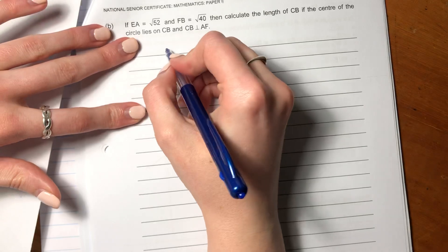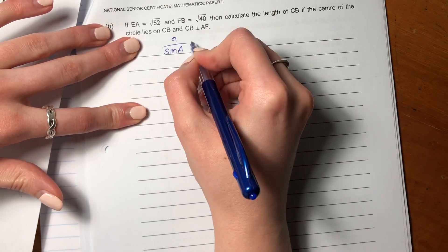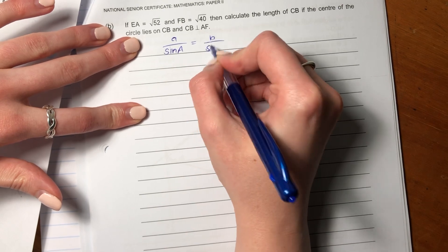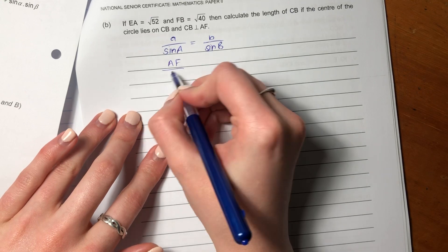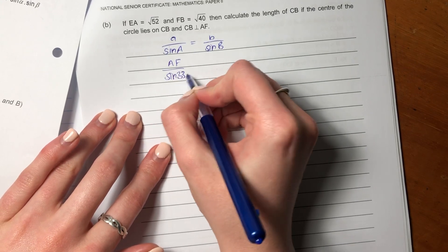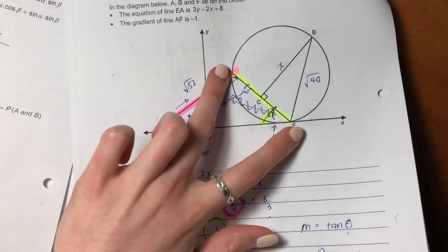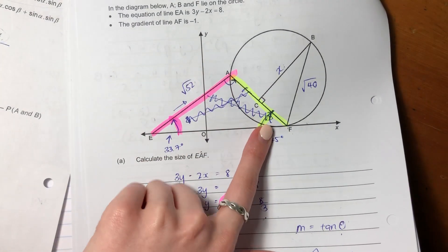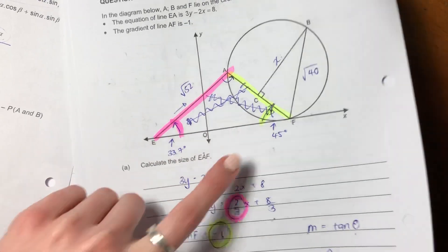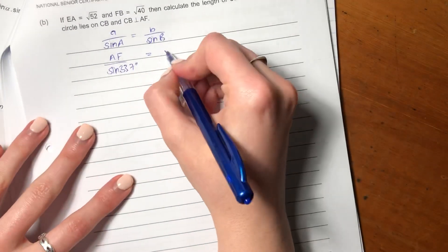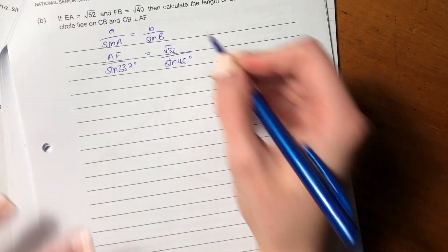So we're going to say AF over sine 33.7. So we say this length over opposite angle, then we're going to say equals that length over opposite angle.